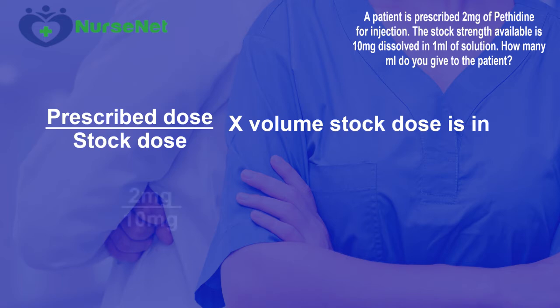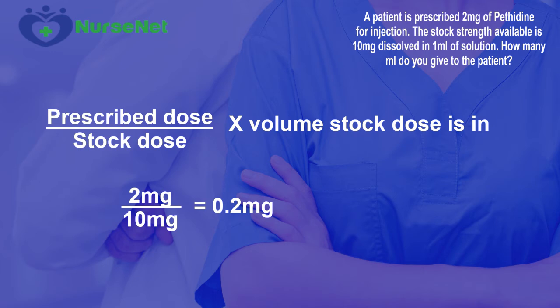So in this instance we have the prescribed dose of 2mg, and that's divided by the stock strength, that's 10mg. So 2 divided by 10 gives us 0.2. 0.2 multiplied by the 1ml that the stock strength is dissolved in remains at 0.2ml. So that's our answer: 0.2ml.